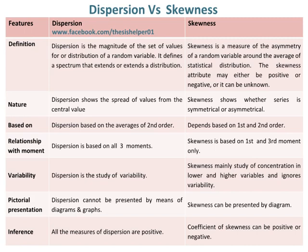Dispersion cannot be presented by means of diagrams and graphs, whereas skewness can be presented by diagram. All the measures of dispersion are positive, whereas the coefficient of skewness can be positive or negative.